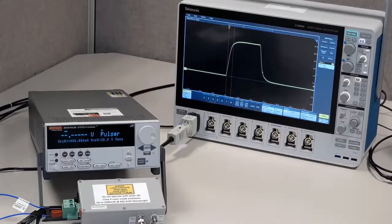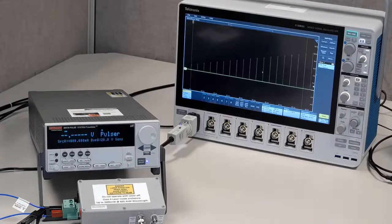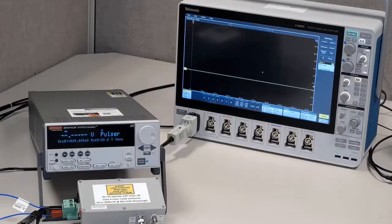The new 2601B Pulse changes all that by eliminating the need to manually tune the output for load impedances up to 3 µH,